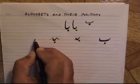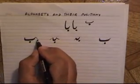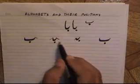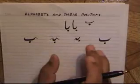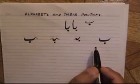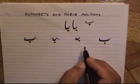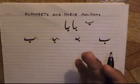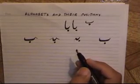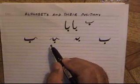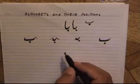Likewise, the final position of Be is similar to the independent position, but here we have the connector at the beginning. So Be has three different positions: Be at the initial position, Be in the middle position, and Be in the final position. Our objective is to understand how different alphabets take different positions. Besides this, we can divide alphabets into two blocks: those alphabets which can be used as connectors, taking different positions, and those known as non-connectors, which do not take the medial or initial positions.